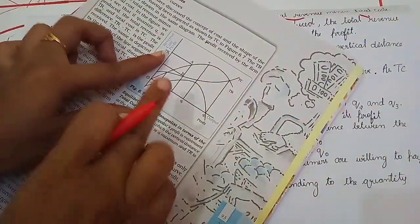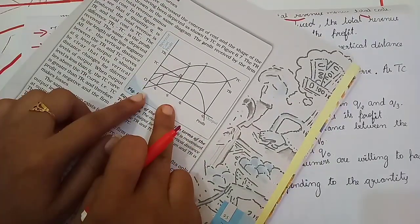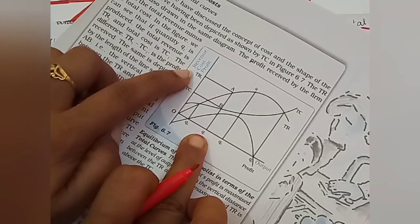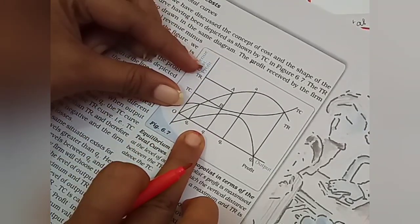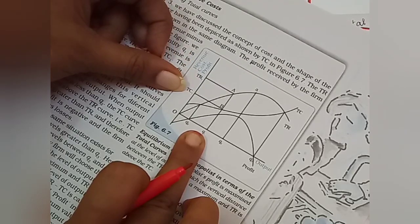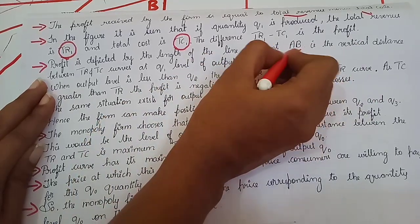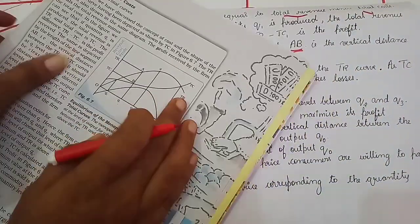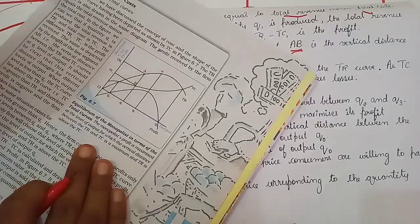Next, in the figure it is seen that if quantity Q1 is produced, the total revenue is TR1 and total cost is TC1. The difference TR1 minus TC1 is the profit. This is the same diagram that I just explained. So at Q1 level of output, total cost is TC1, total revenue is TR1. And how do we calculate the profit? TR1 minus TC1. Profit is depicted by the length of the line segment AB, that is the vertical distance between TR and TC curves at Q1 level of output.